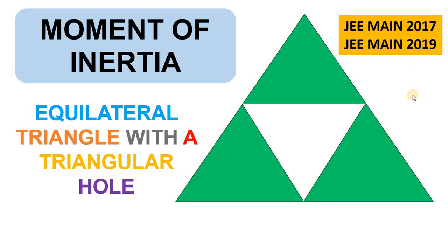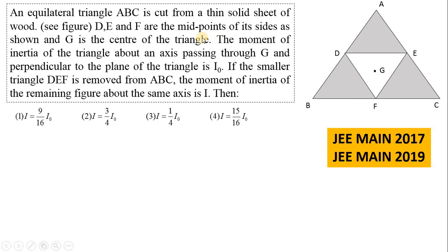Let us read the question. An equilateral triangle ABC is cut from a thin solid sheet of wood — this triangle ABC is a triangular plate cut from a sheet of wood. DEF are the midpoints of its sides as shown, and G is the center or centroid of the equilateral triangle ABC. The moment of inertia of the triangle about an axis passing through G and perpendicular to the plane of the triangle is I₀.